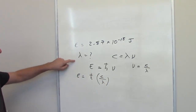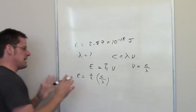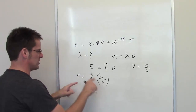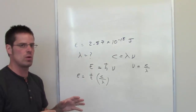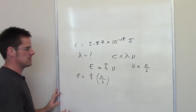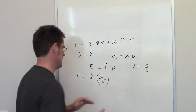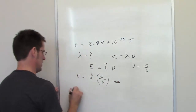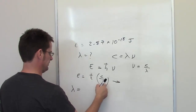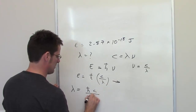So energy is going to be equal to Planck's constant multiplied by the speed of light divided by wavelength. The question is asking us to determine wavelength, so I have to do some algebra to rearrange this so that I get wavelength on one side of the equation in the numerator and everything else on the opposite side. We'll see that wavelength is equal to Planck's constant multiplied by the speed of light divided by energy.